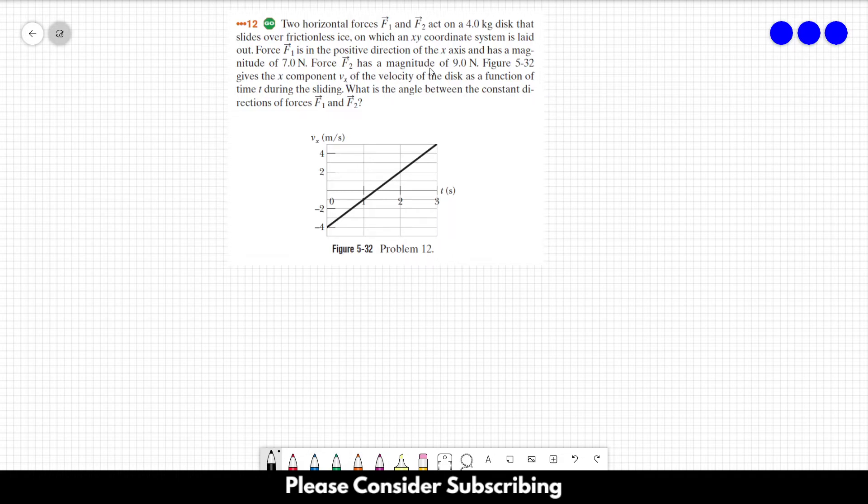Force F1 is in the positive direction of the x-axis and has magnitude of 7 N. Force F2 has a magnitude of 9 N. This figure gives the x-component Vx of the velocity of the disc as a function of time t during the sliding. What is the angle between the constant directions of forces F1 and F2?